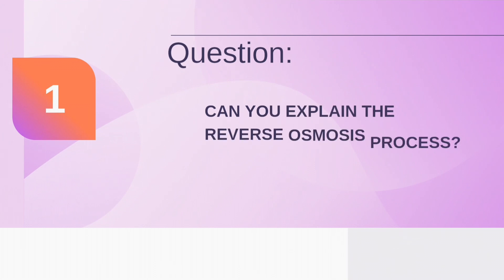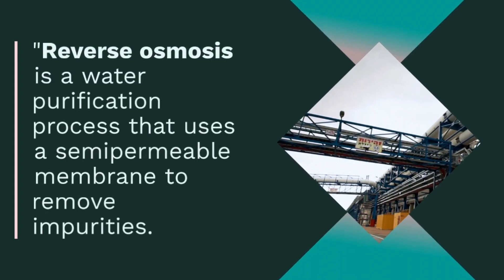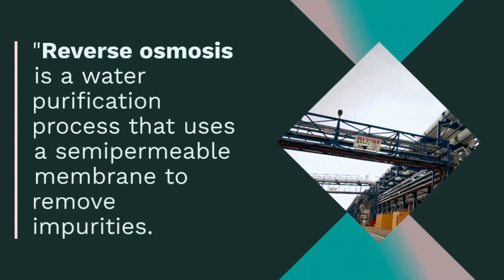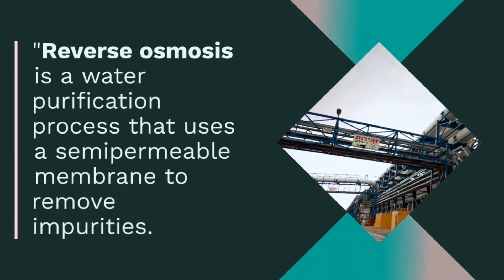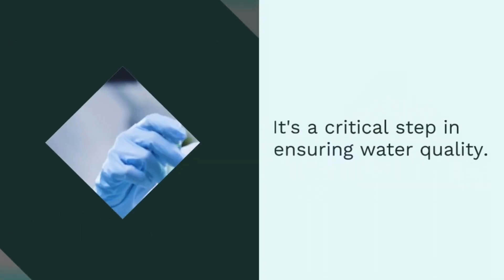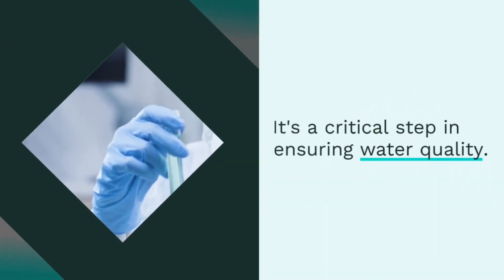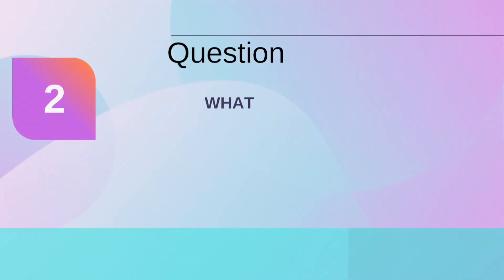Question 1: Can you explain the reverse osmosis process? Reverse osmosis is a water purification process that uses a semi-permeable membrane to remove impurities. It's a critical step in ensuring water quality.